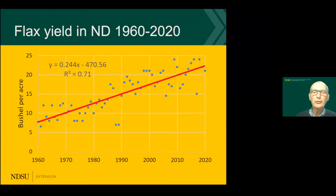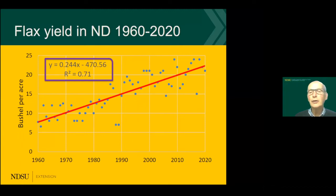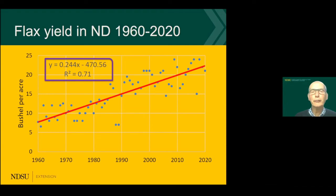If you plot all the data points you can see a trend line, indicated here in red. Looking at that formula, on average we have gone up about a quarter of a bushel per year in yield from the 60s to 2020. There is an increase in actually obtained yield, and there are always a couple of factors involved — genetics, which I'll address through varieties, and management, which affects the realization of genetic potential.